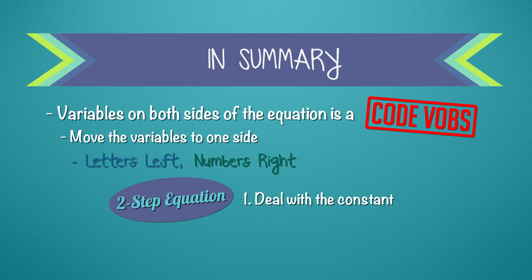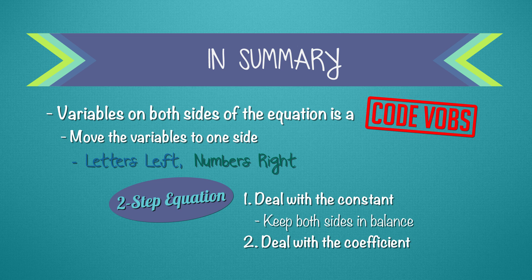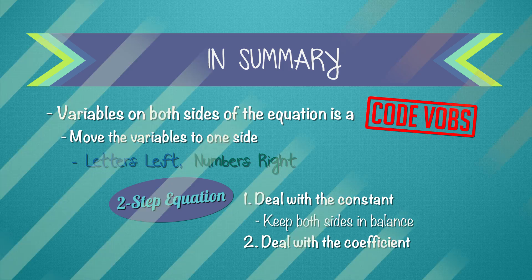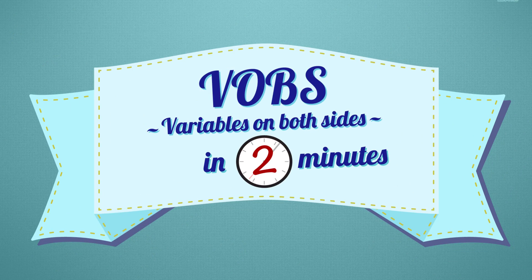First, we deal with the lonely number, the constant. Be sure to keep both sides in balance. Second, deal with the coefficient to get x by itself, and keep both sides in balance. And there you have it. Variables on both sides of the equal sign, or code VOBS, in 2 minutes.